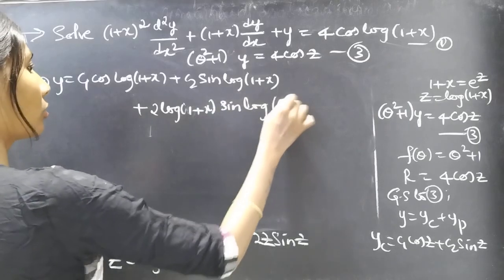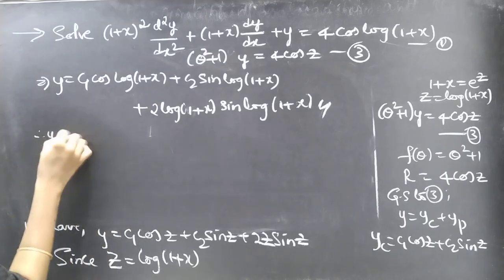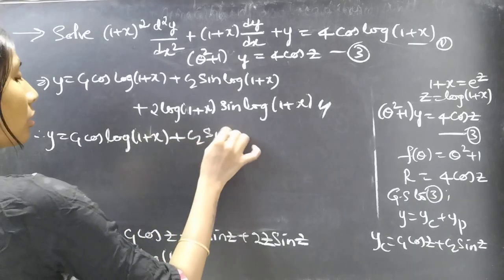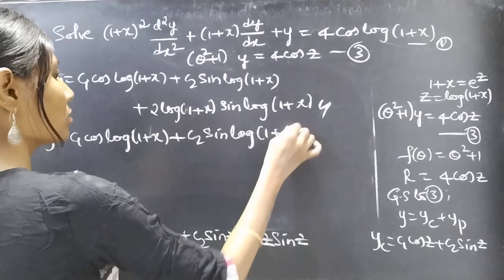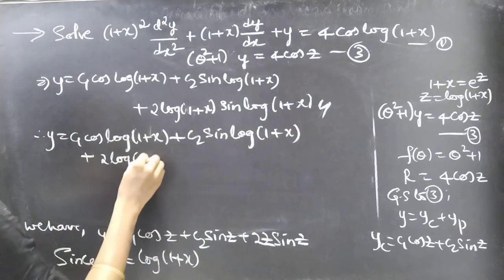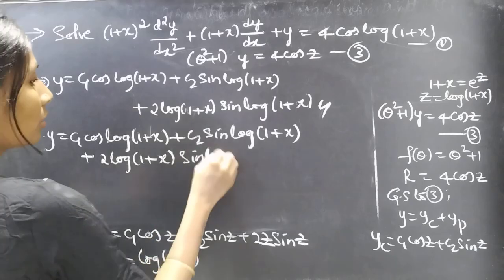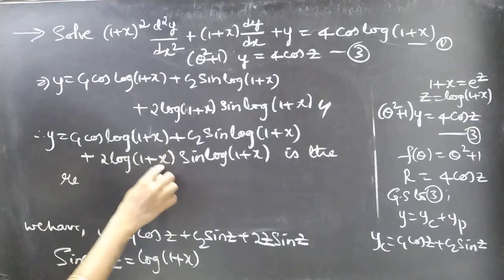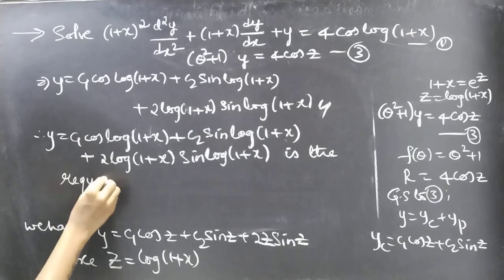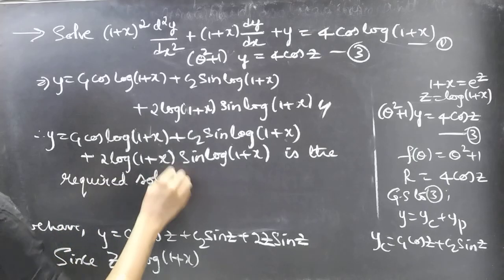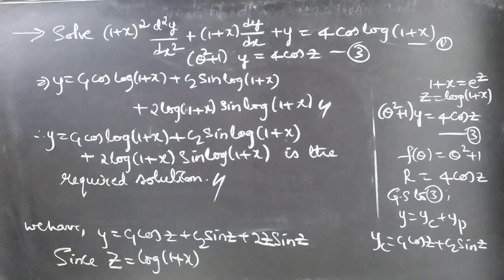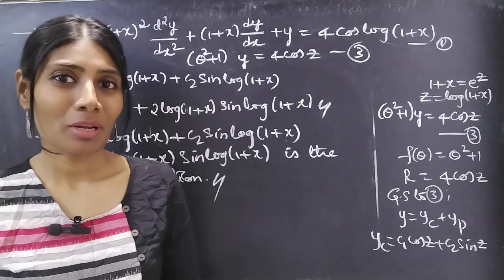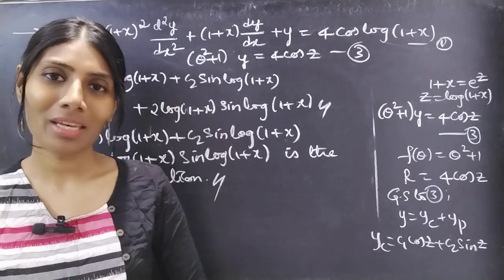The required solution is y = c₁cos(log(1+x)) + c₂sin(log(1+x)) + 2log(1+x)·sin(log(1+x)). This is the general solution in terms of x. We have seen a problem from Legendre's equation in this video. I hope you understand. See you in the next video — bye bye!